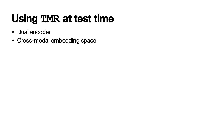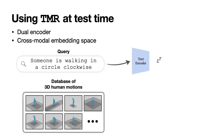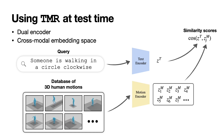Our approach uses a dual encoder to project text and motion into a joint embedding space. We embed the query text into a latent code ZT, we encode each motion in the database into latent embedding ZM, and we then compute cosine similarity scores between the query text and each motion and rank them.